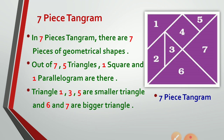Next, the seven-piece tangram: it contains seven pieces of geometrical shapes — five triangles, one square, and one parallelogram. Triangles one, three, and five are smaller triangles, while triangles six and seven are bigger triangles, as you can see in the given figure.